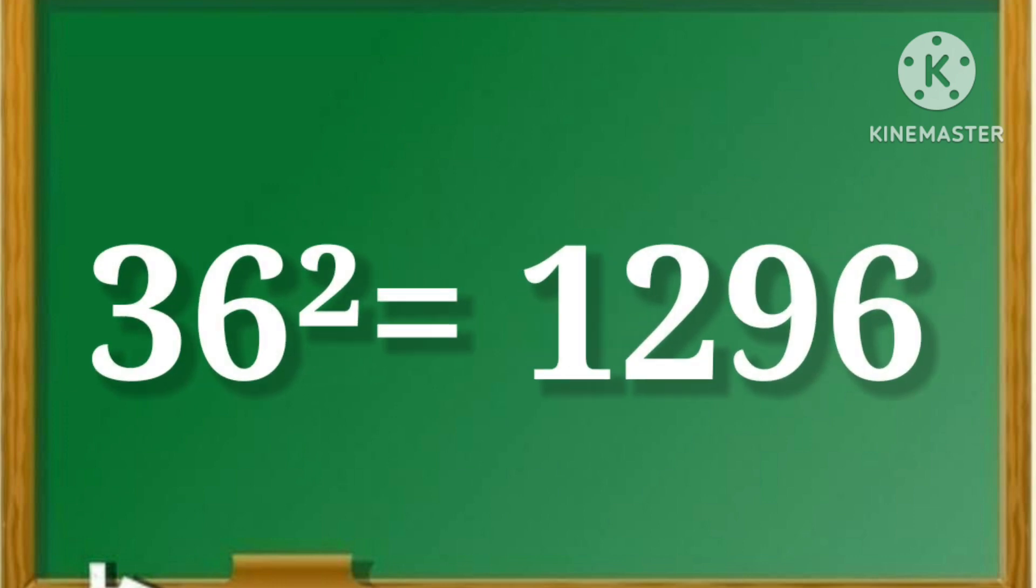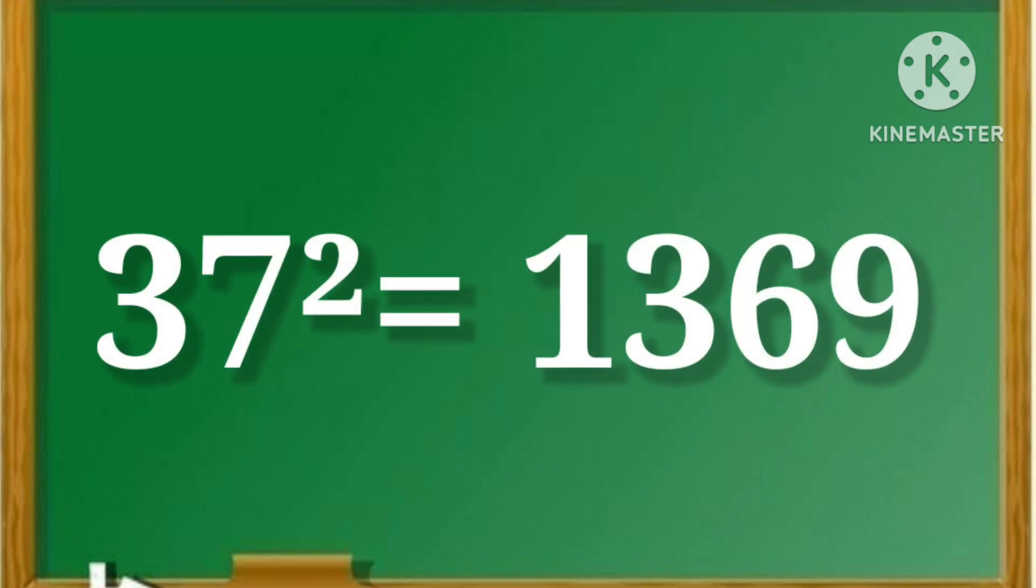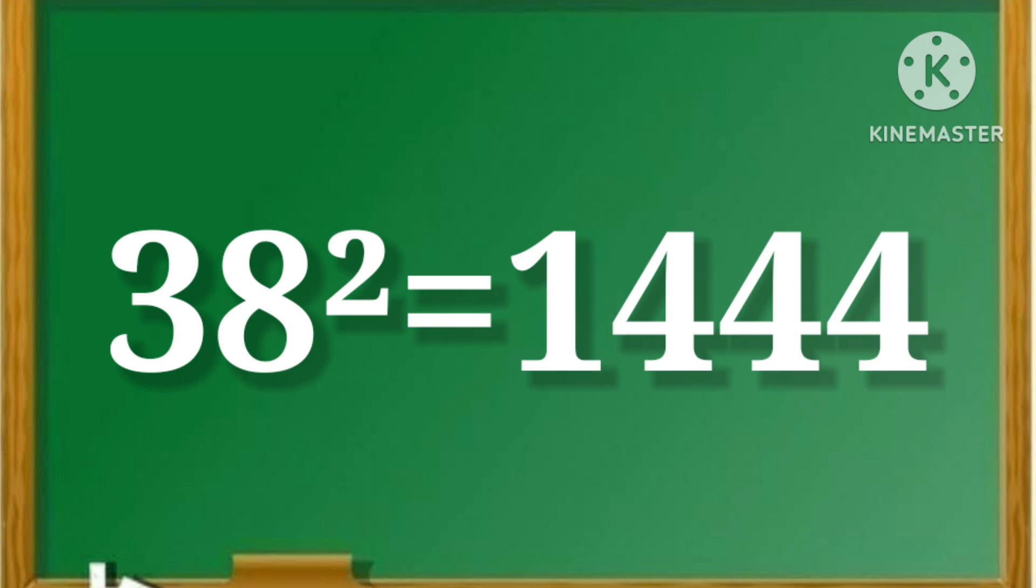36 square is equal to 1296. 37 square is equal to 1369. 38 square is equal to 1444.